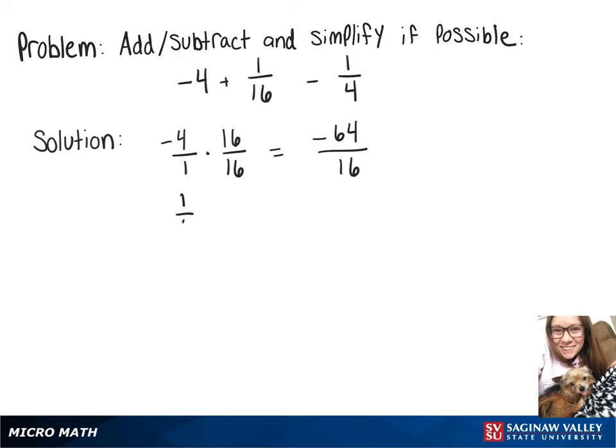Now we can take our 1 fourth, multiply that by 4 over 4, which is equal to 4 over 16, which again, that's still equal to 1 over 4.